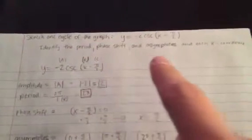Okay, so your job is to sketch one cycle of the graph y equals negative 2 cosine of x minus pi over 2 in the parentheses. And you need to identify the period, the phase shift, and the asymptotes, as well as where each x-coordinate is on the graph.